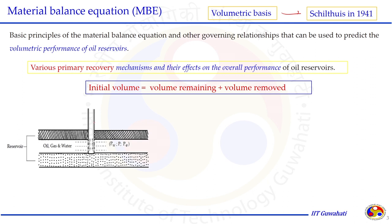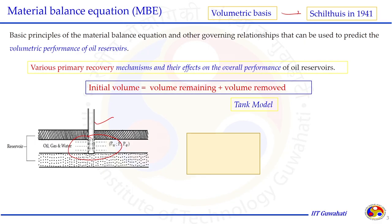This is a schematic diagram of the reservoir domain where oil, gas, water, and rock are present. Comparing with the volumetric balance, the reservoir volume can be considered as a tank — that is why this model is also called the tank model. Within the tank model we consider the boundaries of the reservoir and whatever changes in volume happen within those boundaries.